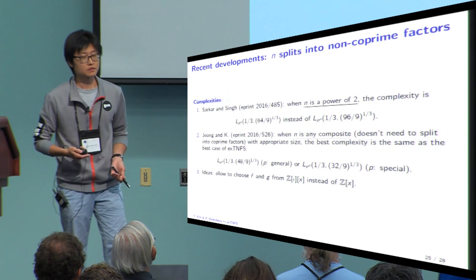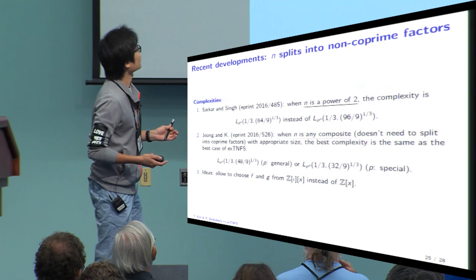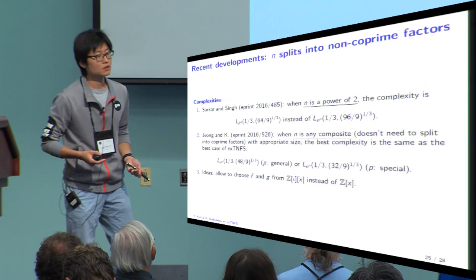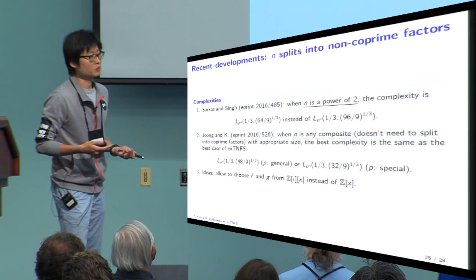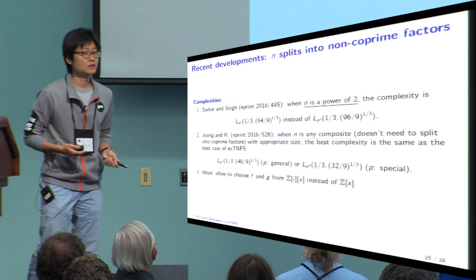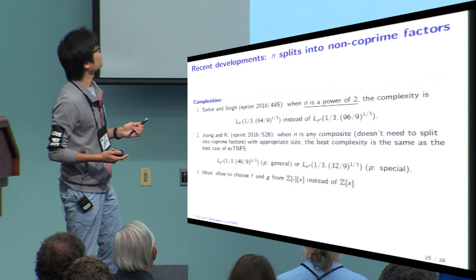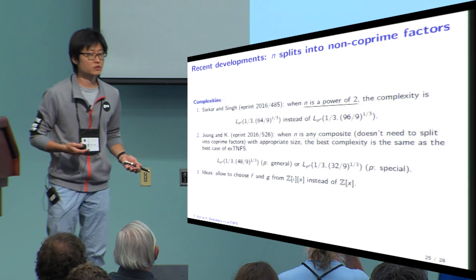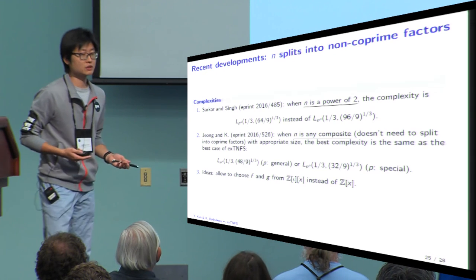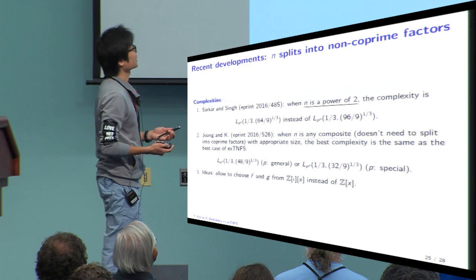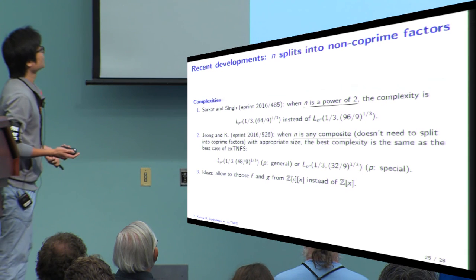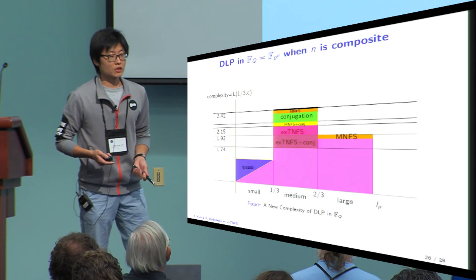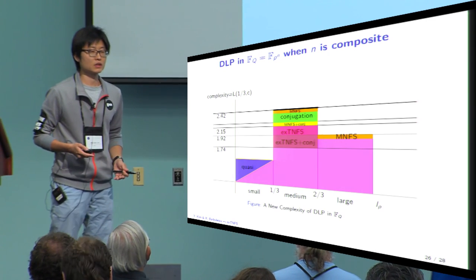I'd like to announce some recent developments on this work, which apply to embedding degree N that splits into non-coprime factors. Sakai and Shinzawa showed that when N is a power of 2, we have a complexity of L[1/3, 64/9]. But soon after, Jung and I showed that when N is any composite number, we have the same best complexity as in EXTNFS. The idea is simply to choose F and G from Z[iota] instead of Z. So we have this result for any composite N with the appropriate size of factor.